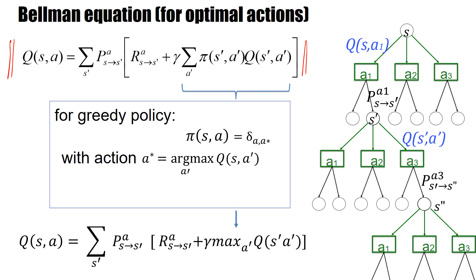Sometimes the Bellman equation is limited to a greedy policy. If you use a greedy policy, you only pick one action — specifically action A*, defined as the argmax over Q values. That means instead of a sum over the policy, you now have just the maximum Q value, the best action. This is often called the Bellman equation in the narrow sense — the Bellman equation for greedy policy or for best possible values.